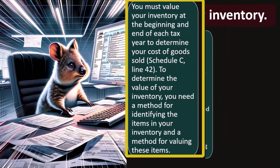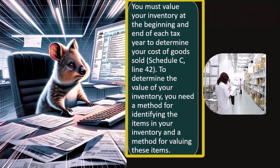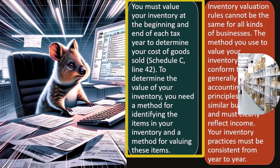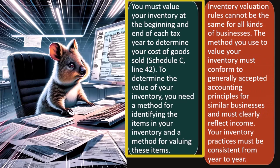Valuing inventory: you must value your inventory at the beginning and end of each tax year to determine your cost of goods sold on Schedule C, line 42. To do that, you need a method for identifying the items in your inventory and a method for valuing them — normally something like a first in, first out flow assumption, which gets more complicated for manufacturing.